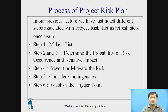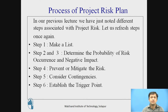In the previous lecture, we noted the different steps associated with project risk. Let us refresh our knowledge once again. Step 1 is to make the list. Steps 2 and 3 are combined to determine the probability of risk occurrence and its negative impact. Step 3 is to prevent or mitigate the risk. Step 4 is to consider the contingencies. Step 6 is to establish the trigger point.